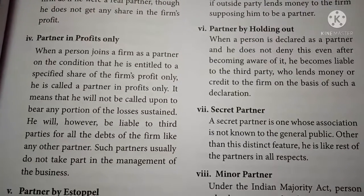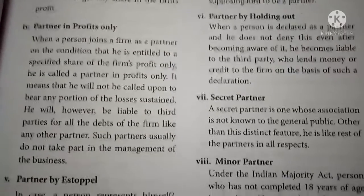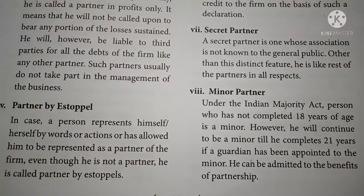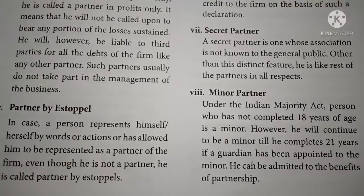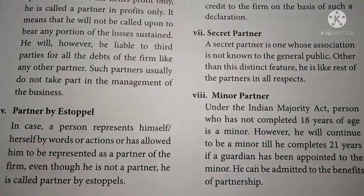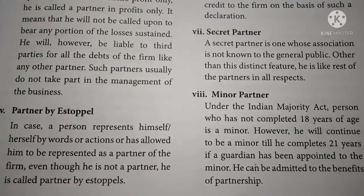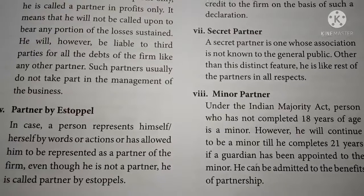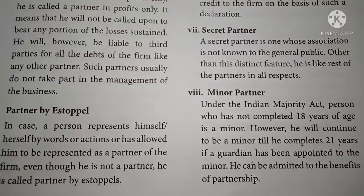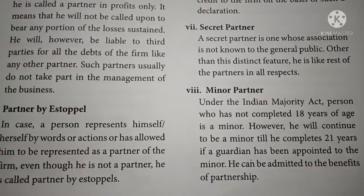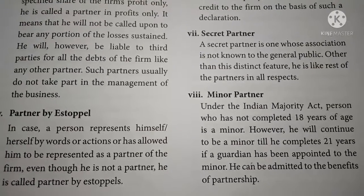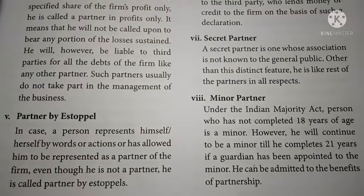Other than this distinct feature, the secret partner is like the rest of the partners in all aspects. Minor partner: under the Indian Majority Act, a person who has not completed 18 years of age is a minor. However, a minor may continue as a partner by his wish until completing 21 years if a guardian has been appointed. Legally, a minor is not allowed as a full partner, but for partnership benefit purposes, a minor can be admitted to the benefits of the partnership firm.